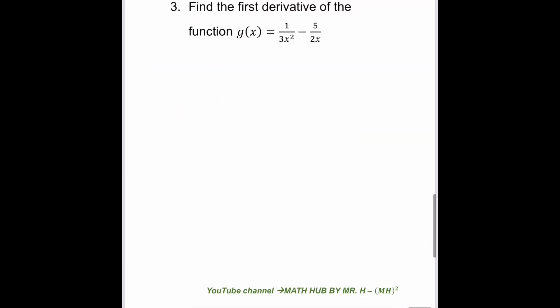Find the first derivative of the function g(x) equals 1 over 3x squared minus 5 over 2x. For this given function, you can stick to it or rewrite it — whichever makes it easier to find the derivative. Just be careful when rewriting and make sure the rewritten function is still correct.